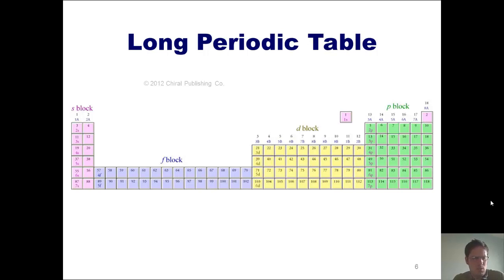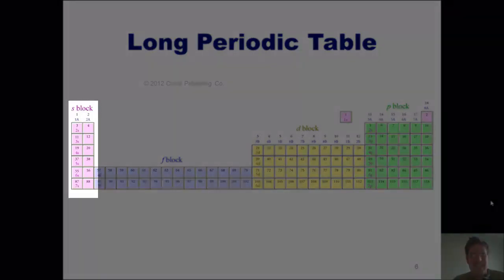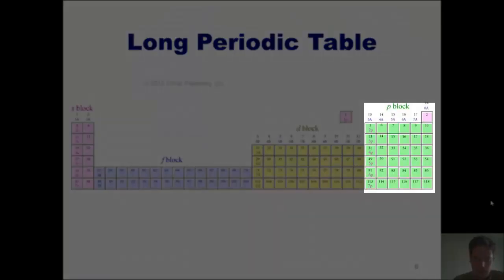You might ask then, well, why do we even separate the elements into blocks like this at all anyway? Why don't we just put them on the periodic table alphabetically or something? The reason is that these elements are all sorted on the periodic table in a very specific way according to their individual chemical properties. These other blocks, by the way, are called the S, D, and P blocks.